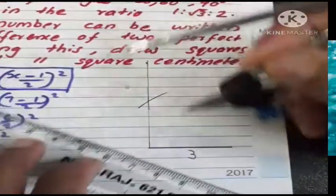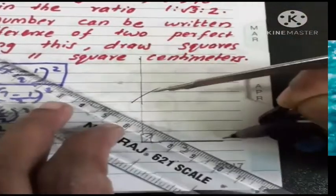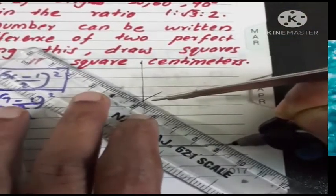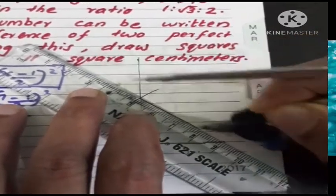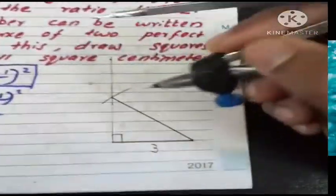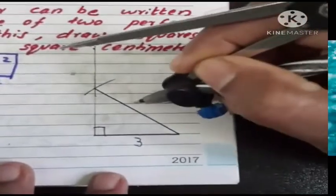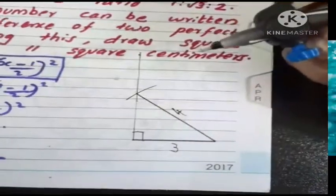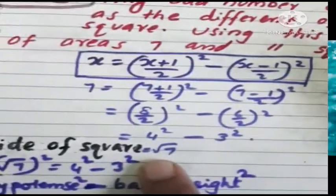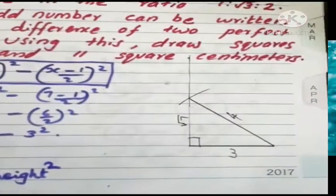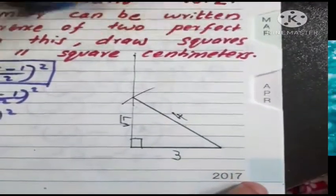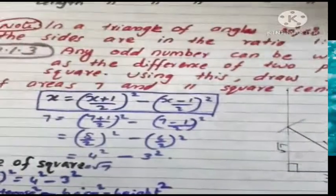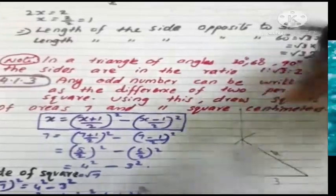The hypotenuse 90 degree, the side hypotenuse 4 centimeter. Then this current becomes root 7 and we can draw a square of area 7. Then the side is root 7.